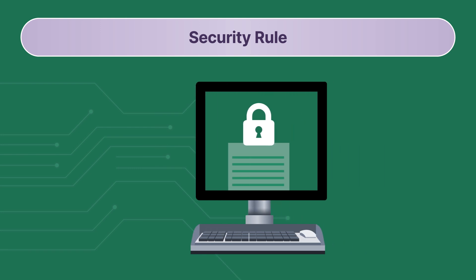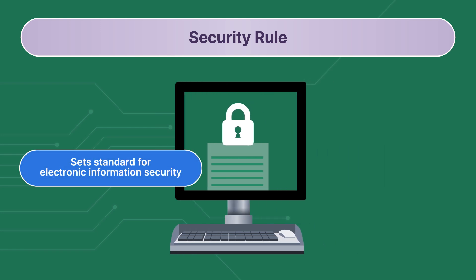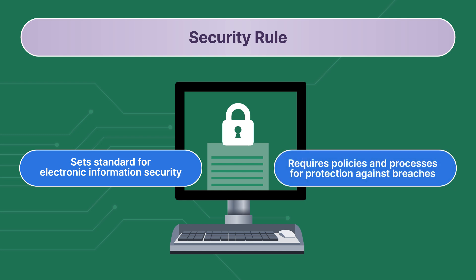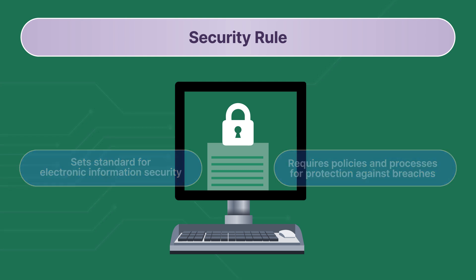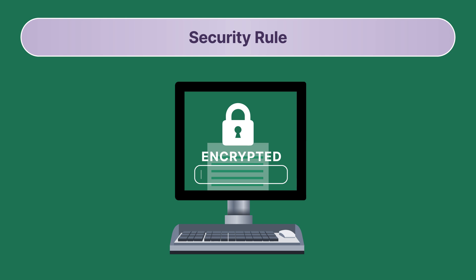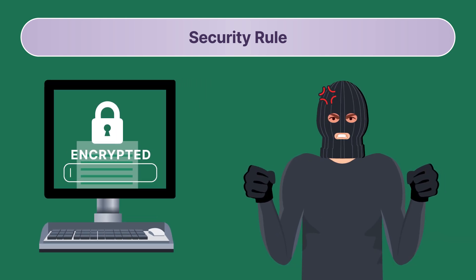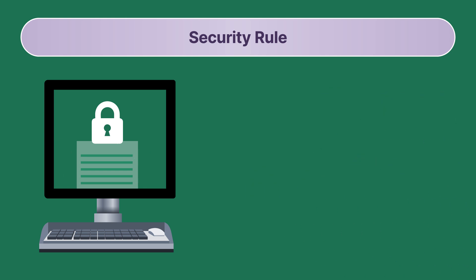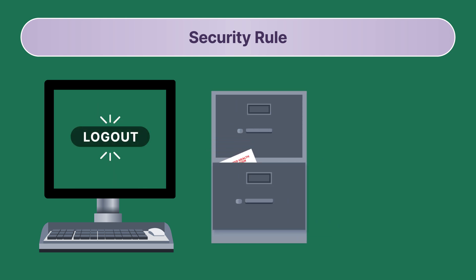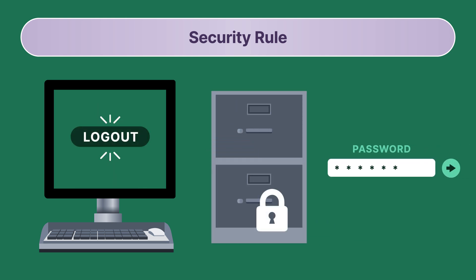The next rule is the Security Rule. This rule sets standards, which must be followed by all health care providers, for patient health information's security in electronic form. It requires that all health care providers establish policies and processes for protection against breaches. An example of this might be the use of encrypted software to store and transmit electronic patient data, ensuring no unauthorized access. Whether paper-based or electronic, facilities and health care workers should always ensure patient records are secure. This might mean logging out of computer systems, locking file cabinets, or using password-protected software.